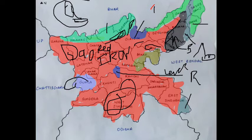Laterite and lateritic soil — they are found in three regions: Highlands of Rajmahal, western plateau, Ranchi plateau, part of south Palamu, and east Singhbhum region, and some other areas.